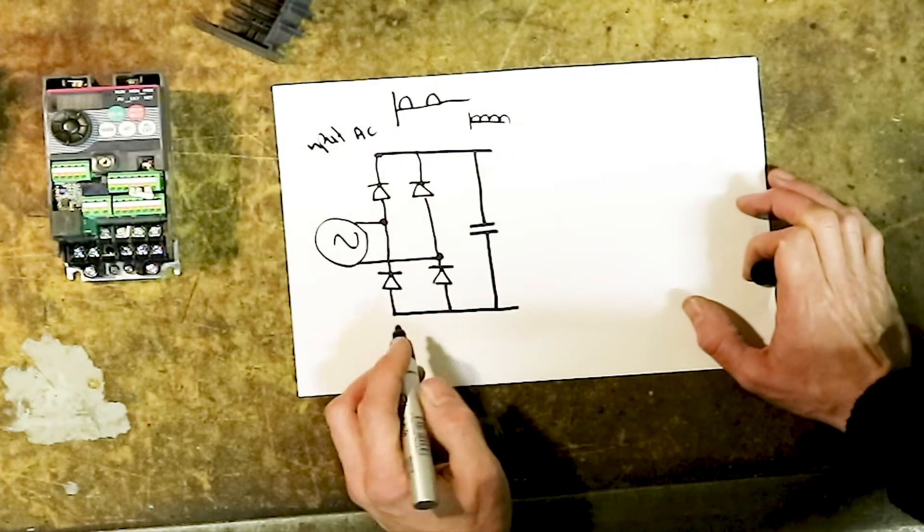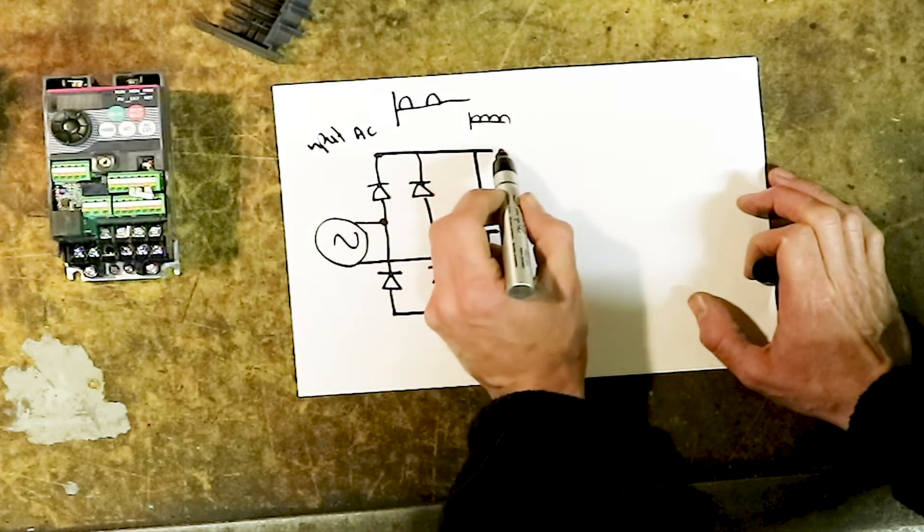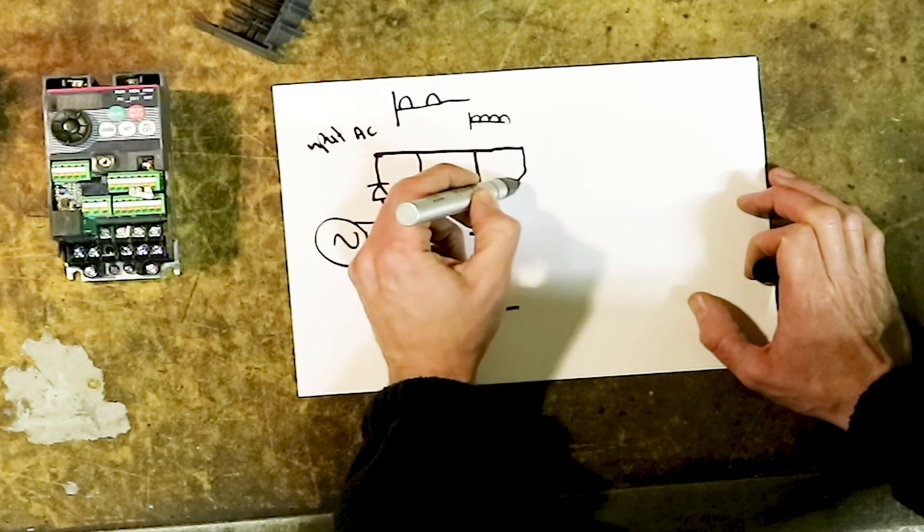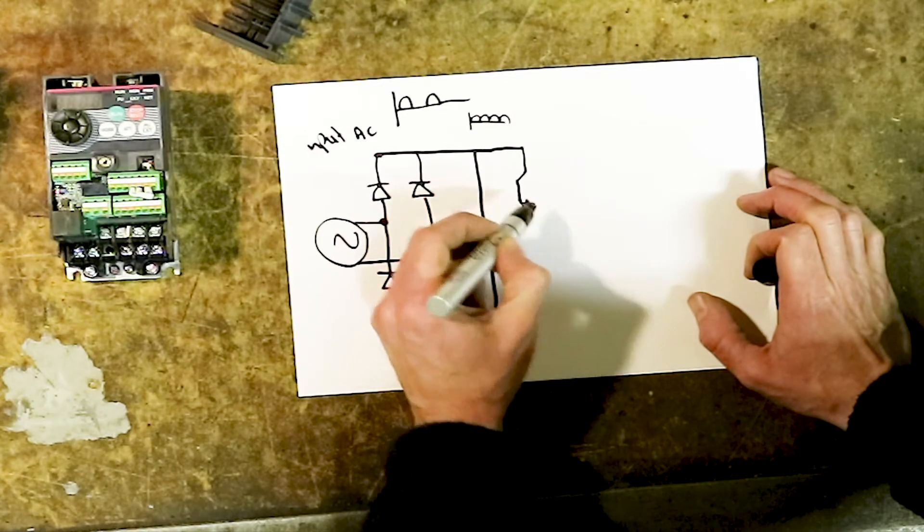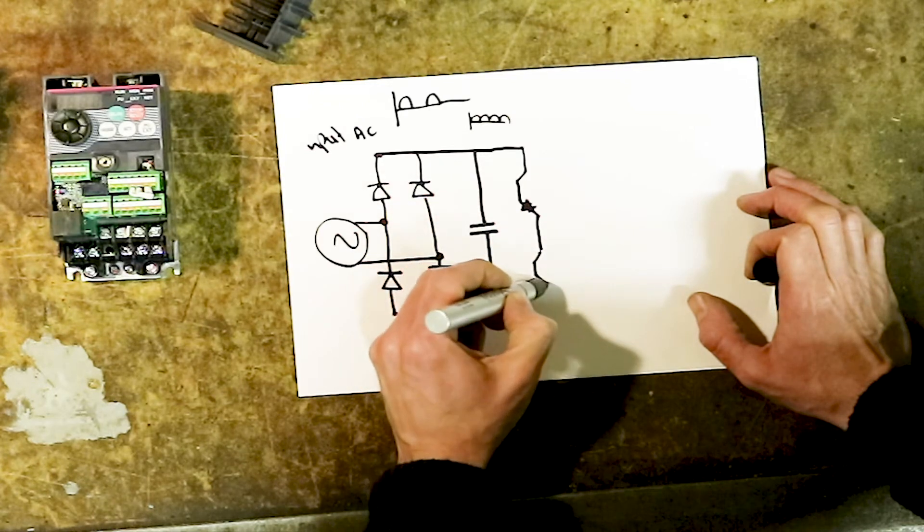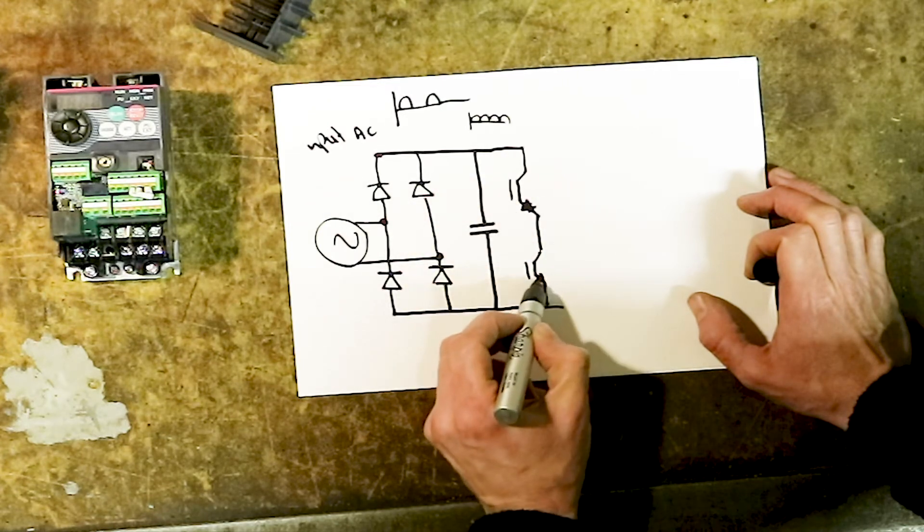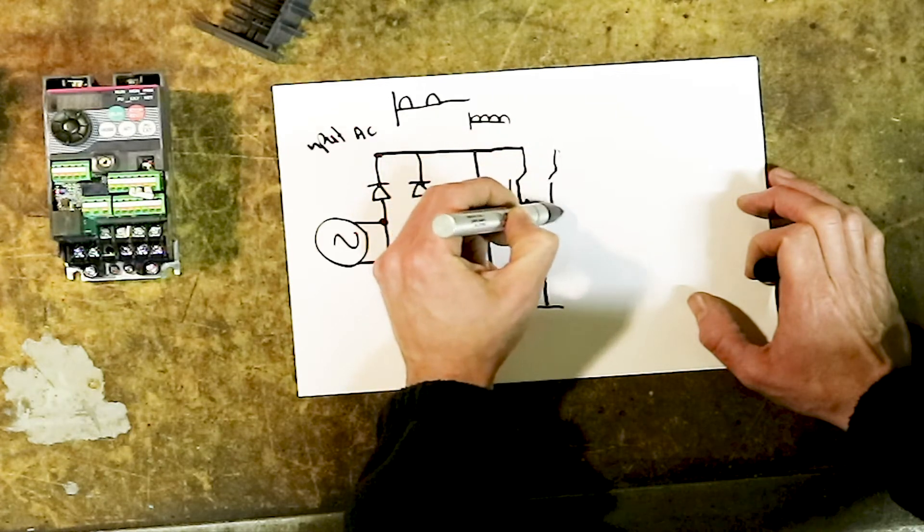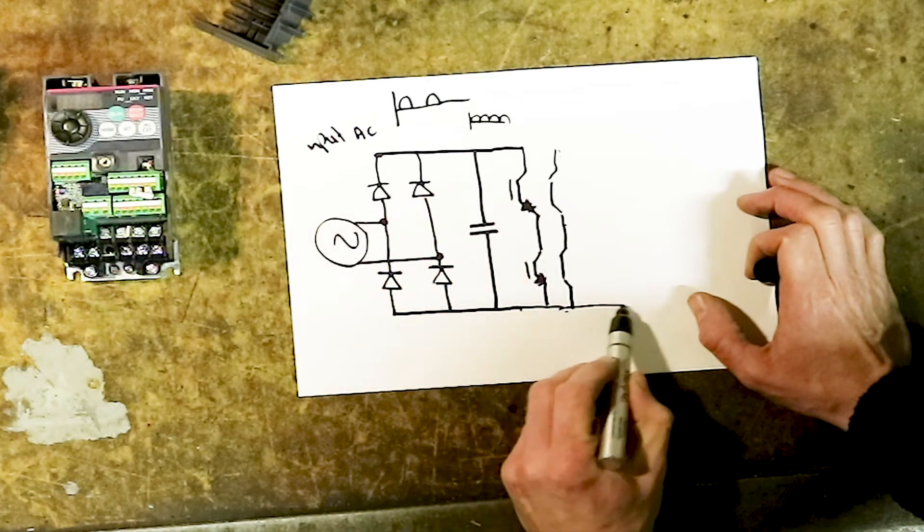On the output side you're going to have IGBTs for three phase output, which look a little something like this, but normally they're drawn better. You've got one IGBT with a diode, and you're going to have three of them because it's three phase.